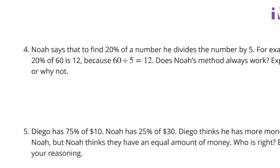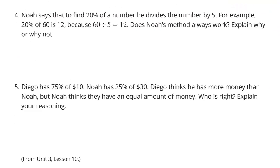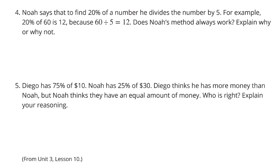Question 4. Noah says that to find 20% of a number, he divides the number by 5. For example, 20% of 60 is 12, because 60 divided by 5 equals 12. Does Noah's method always work? Explain why or why not. If we look at a tape diagram here, it could really help us to understand what's going on when we break a number into 20%.